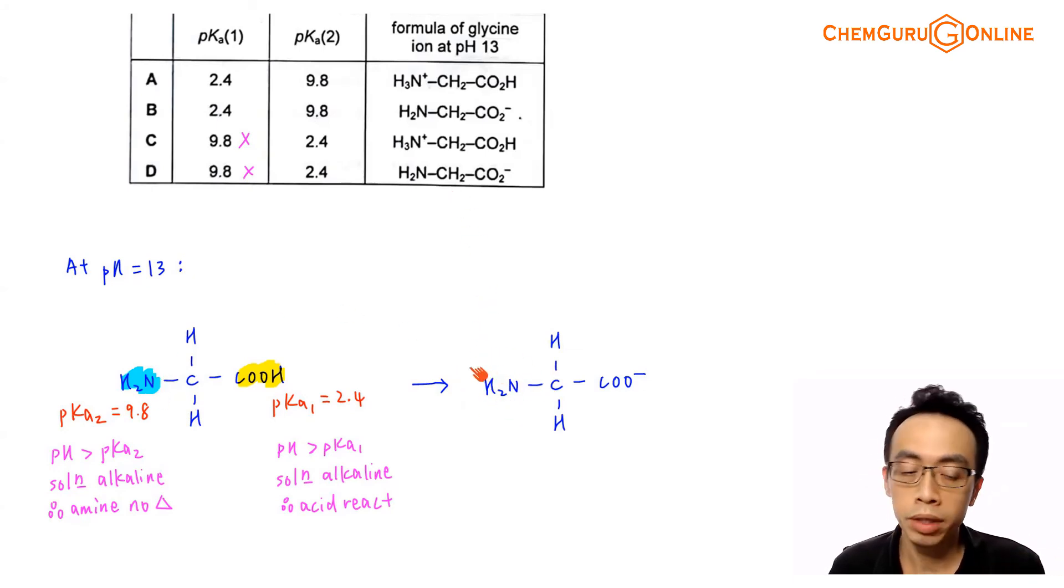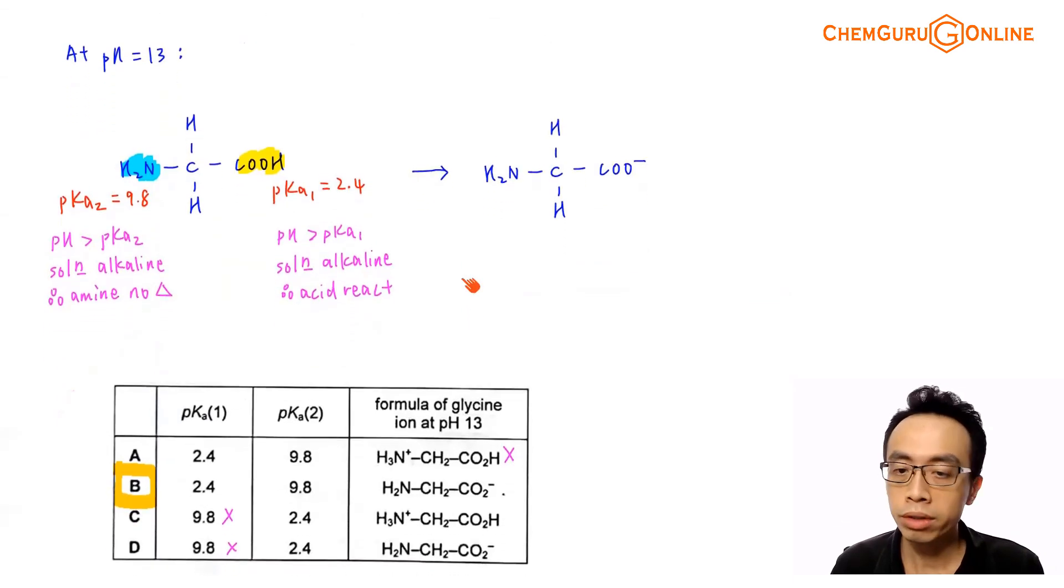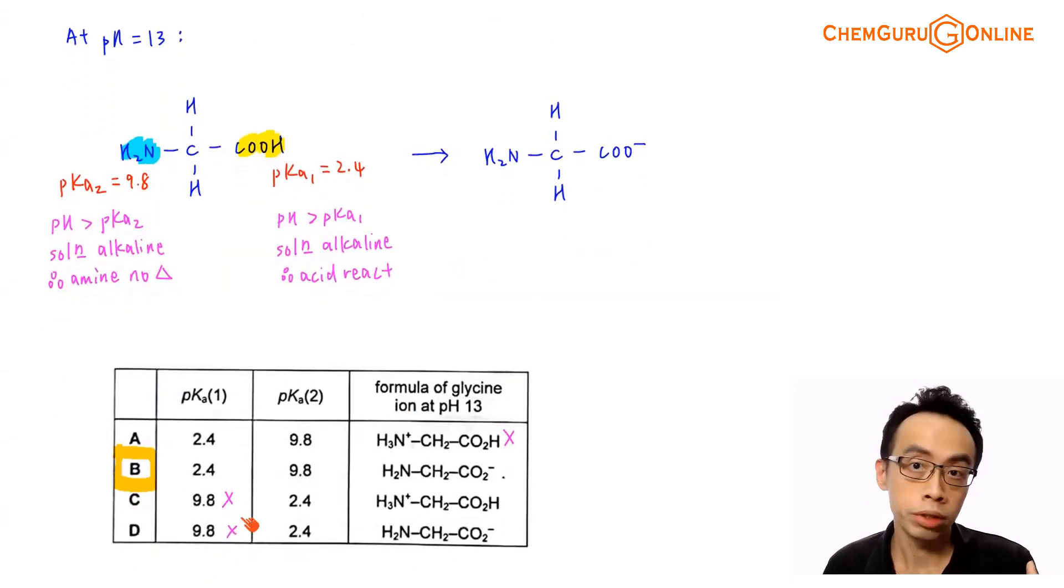So we have determined the species that this amino acid will exist as at pH equals to 13. We just need to run through the options. If I look between options A and B, option A has NH3+, an ammonium and an acid group, which is not what we want. Option B is the better answer. We have our amine and the conjugate base of our acid. So this should be the formula of your glycine at pH 13. The answer to this question will be option B.